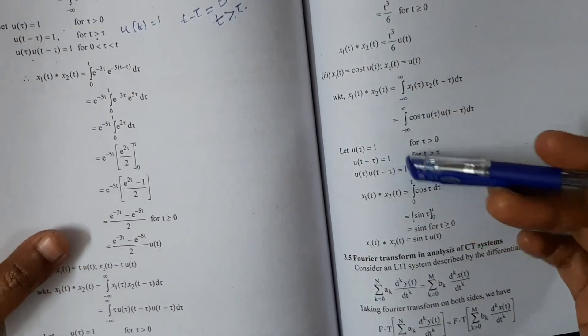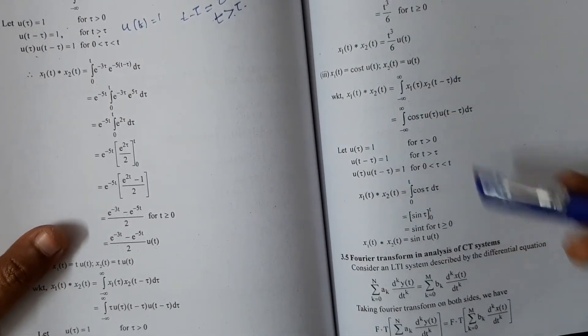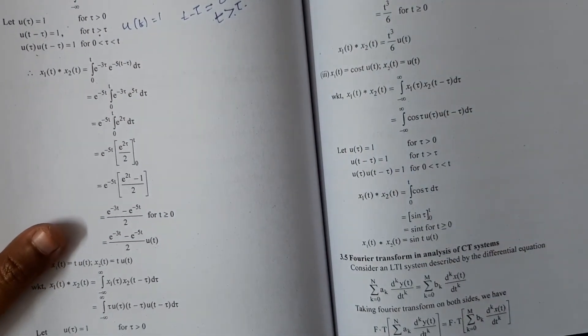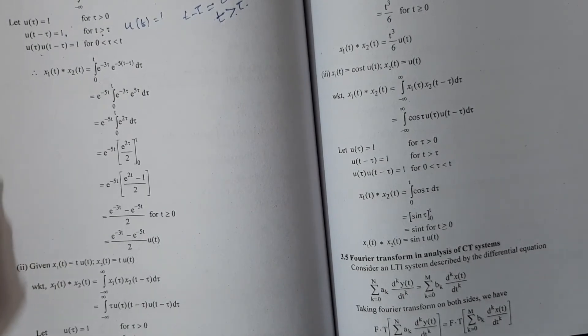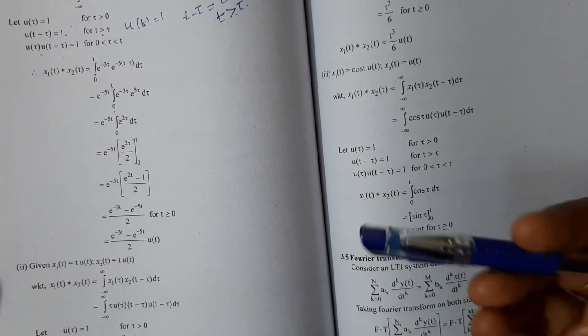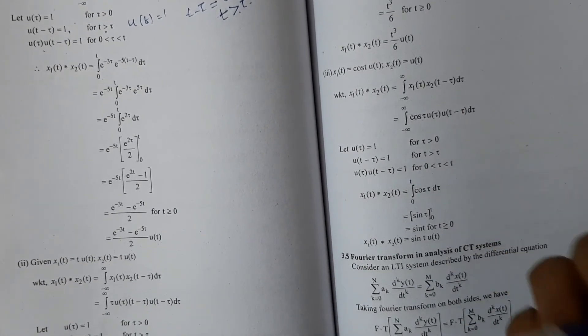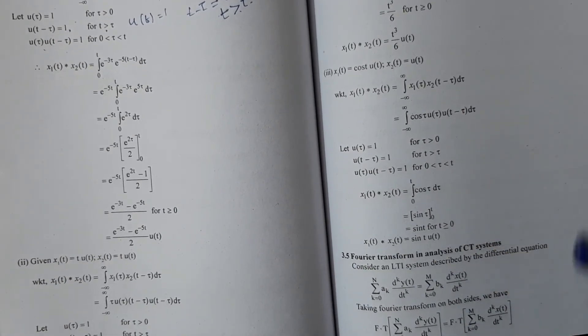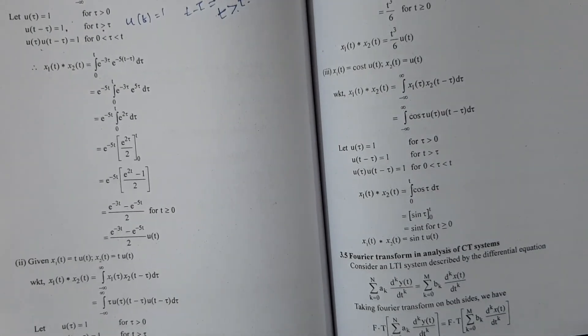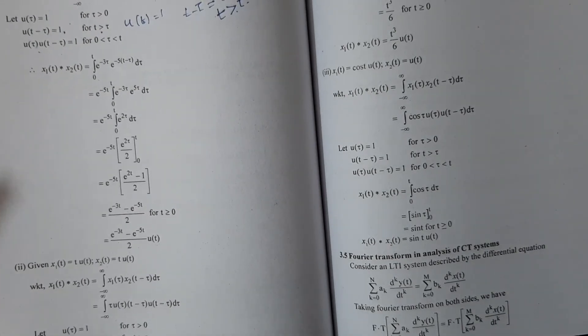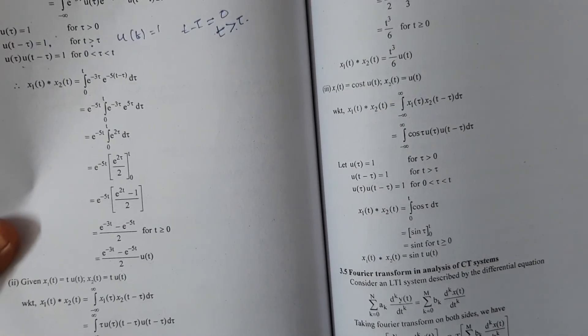Using this method, you can directly apply the convolution formula and write the answer. If the signals are given in diagrammatic representation, you need to evaluate for different values of t such as 0, 1, 2, 3, 4 and write the answer accordingly.